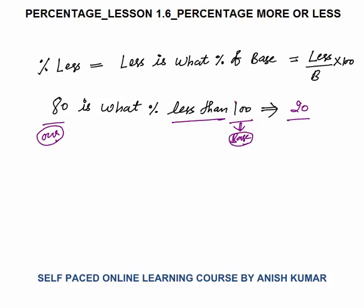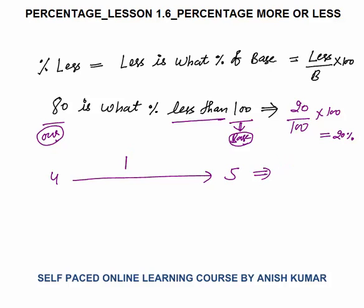Rather than cramming, apply common sense: 80 is our number, we compare it with 100. So 20 by 100 into 100 gives 20%. Since the numbers are simple, you can take the ratio: 80 to 100 is 4 to 5. So 4 is how much percent less than 5? 4 is 1 less than 5, so 1 upon 5 into 100 gives 20%.